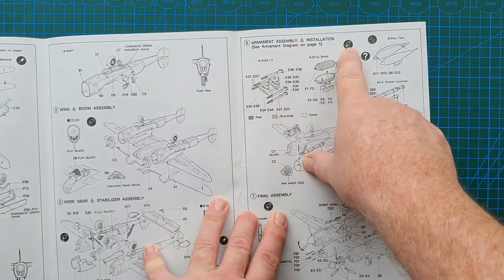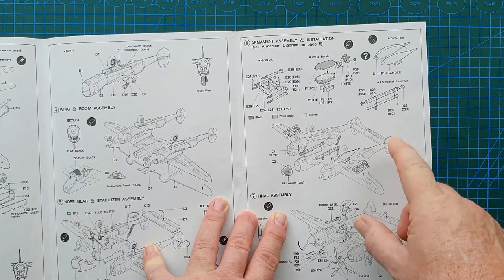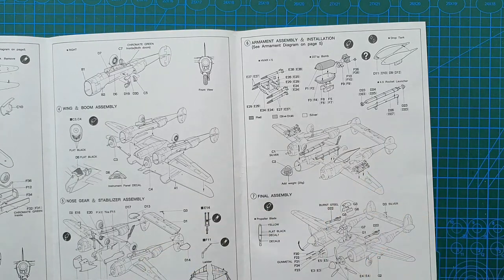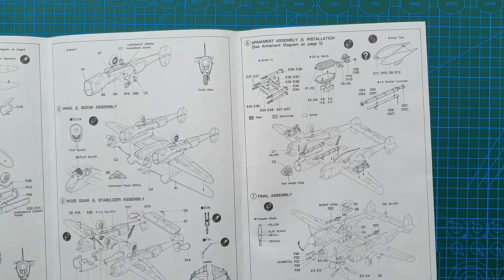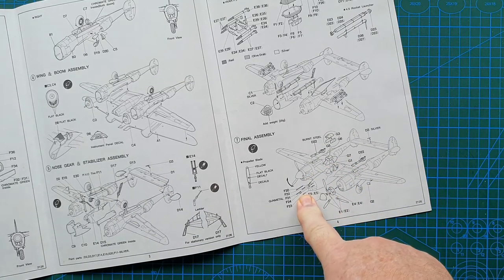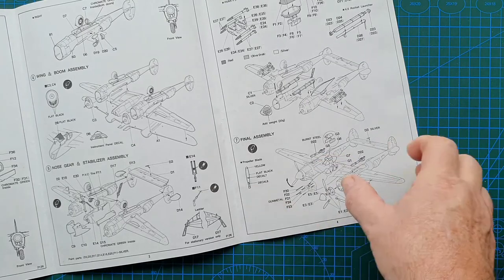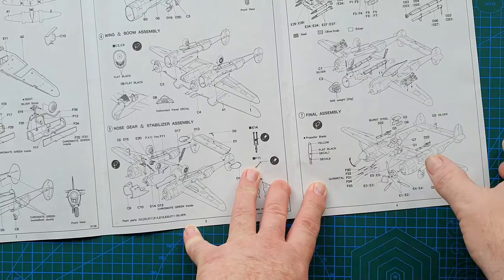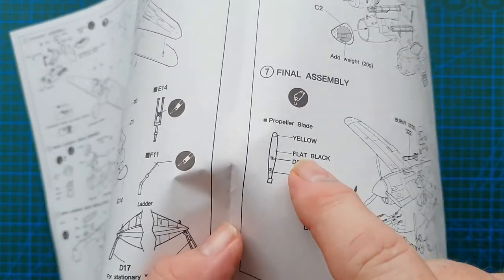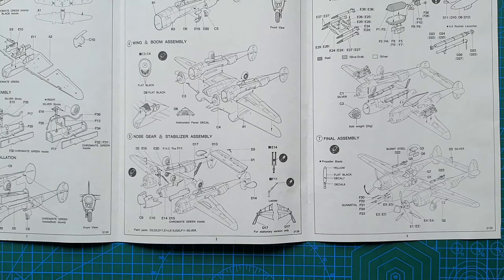Then you come to your armaments. You've got rockets, bombs, drop tank, rocket tubes. So literally, you could make this an extremely heavily armed aircraft or leave all that off and just have it as a pursuit interceptor. Your choice, of course. Final assembly, there's only seven steps. Nose, cannon, propellers, cockpit canopy. And there are decals that go on propeller blades. So that is a nice bit of detail.